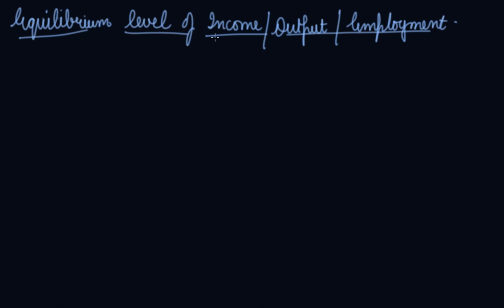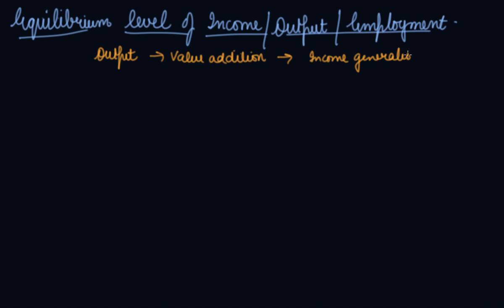In this video we will be studying about the equilibrium level of income, output, and employment. Aggregate supply helps in value addition, and that value addition goes to income generation. Aggregate supply is equal to income. If there is output in equilibrium, then employment is also at its equilibrium, because in order to produce you need employees and workers. This is the relationship between the level of output and the level of employment in the economy.